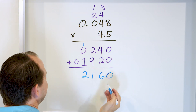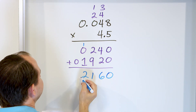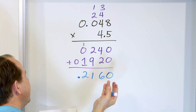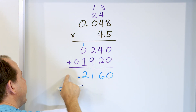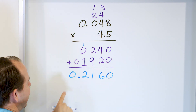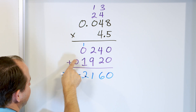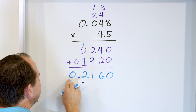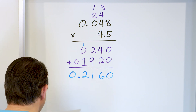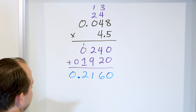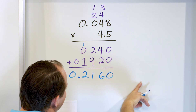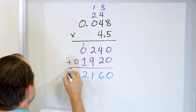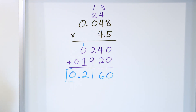Total of 4 digits after the decimal. So we place the decimal to give 4 digits after it: 1, 2, 3, 4. There's an invisible leading 0, so we add that. The final answer is 0.2160. You can drop the trailing zero too, but it's fine to leave it there for completeness.